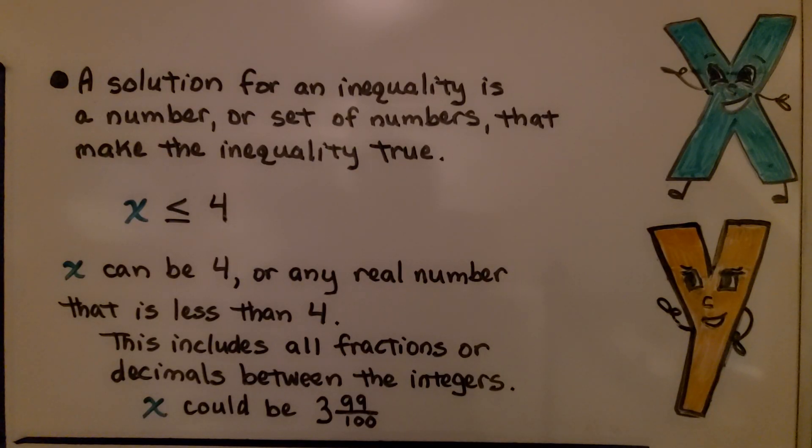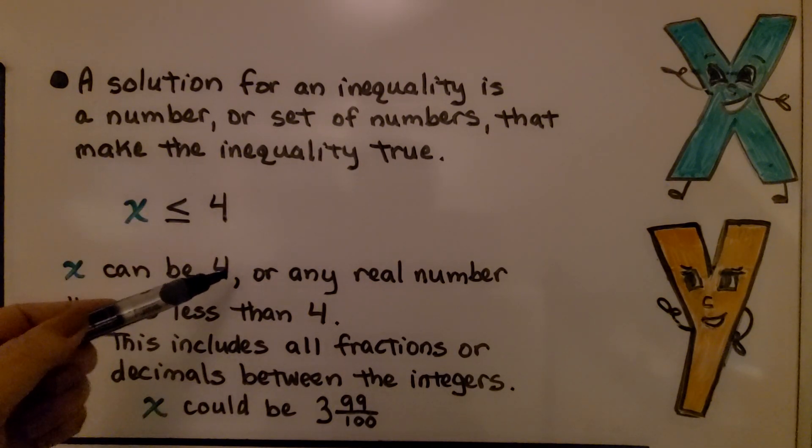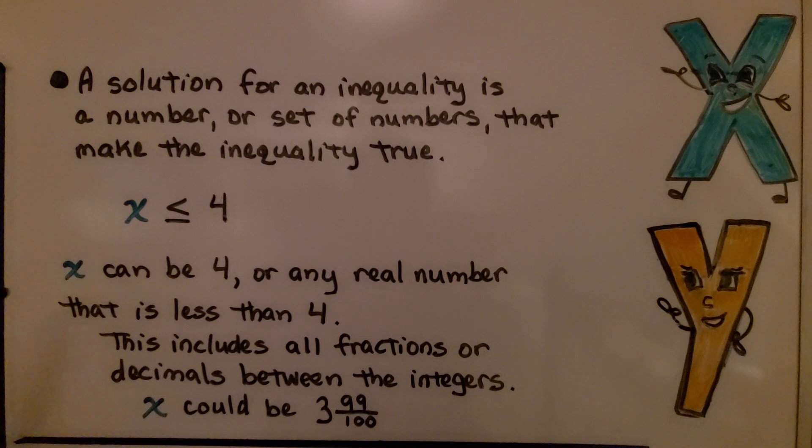A solution for an inequality is a number, or a set of numbers, that make the inequality true. If we have x is less than or equal to 4, x can be 4 because it's or equal to, or any real number that is less than 4. This includes all fractions or decimals between the integers. So x could be 3 and 99 hundredths. That's less than 4. It's right up against the 4 on a number line, but it's less than 4.